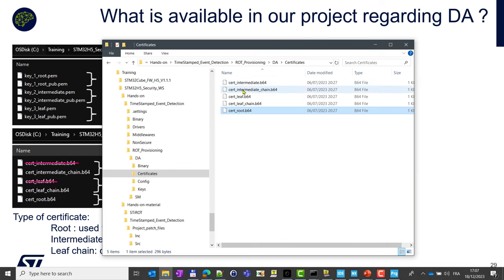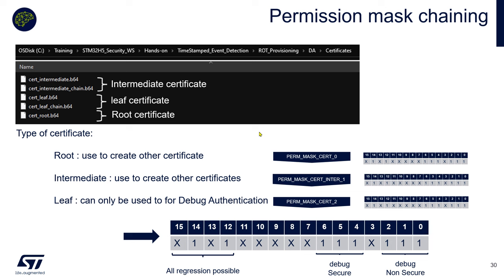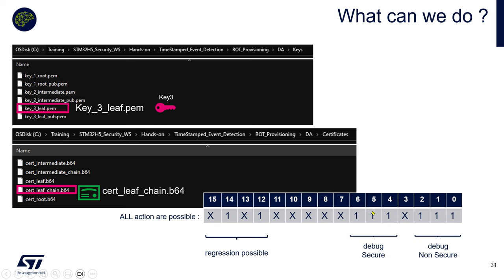This is the full overview of how certificates are generated. When using debug authentication, the team provides their private key and the certificate chain to perform the authentication process on the target. By default in our project we have a root key pair, intermediate key pair, and leaf key pair, with a root certificate, intermediate chain, and leaf chain. You can provide a permission mask at each certificate level — level 0 for root, level 1 for intermediate, level 2 for leaf — progressively restricting capabilities. By default, everything is enabled: regression and debug reopening.